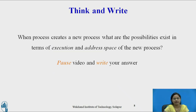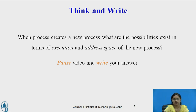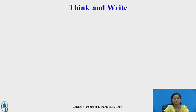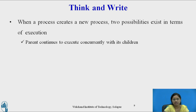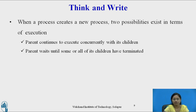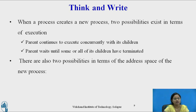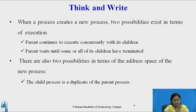Now pause the video and write your answer: when a process creates a new process, what are the possibilities that exist in terms of execution and address space of the new process? The answer is: two possibilities exist in terms of execution — the parent may continue its execution along with the child process, or the parent may wait until the termination of the child process. Similarly, two possibilities exist in terms of address space: the child process may contain a duplicate address space of the parent, or the child has its own program loaded into it.